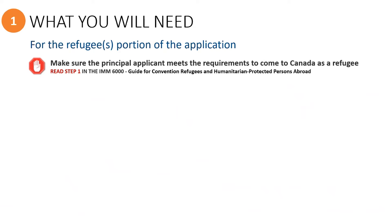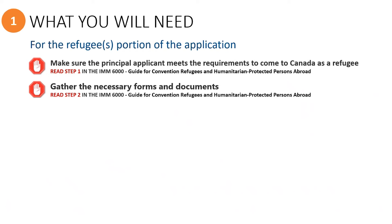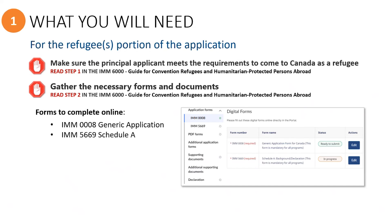So what will you need for the refugees part of the application? You will need to read Step 1 in the IMM 6000 Guide to understand who is eligible to be sponsored, and then read Step 2 to understand what the requirements are for completing the forms. The generic application and Schedule A forms will be completed online directly in the Permanent Residence Portal.